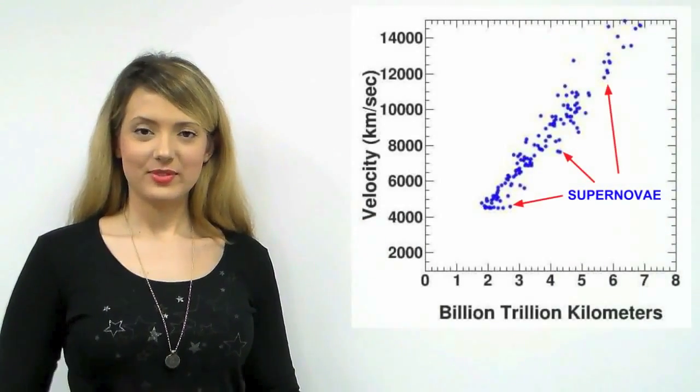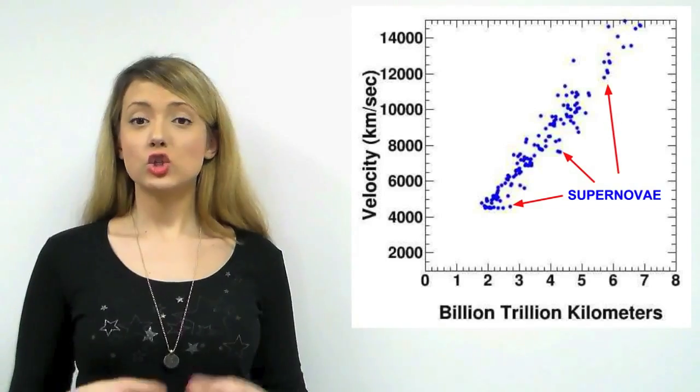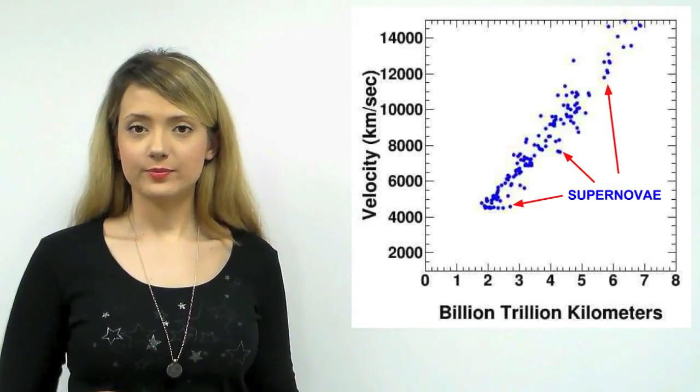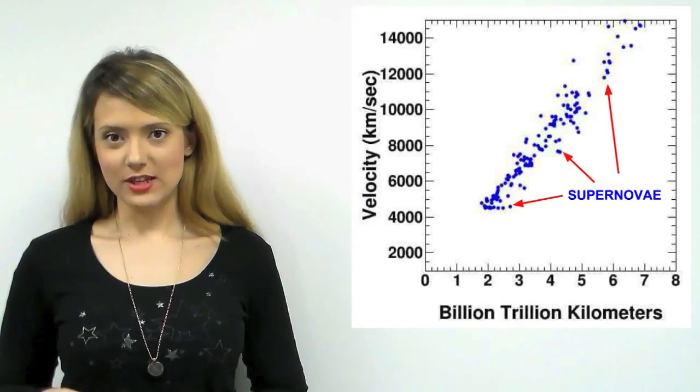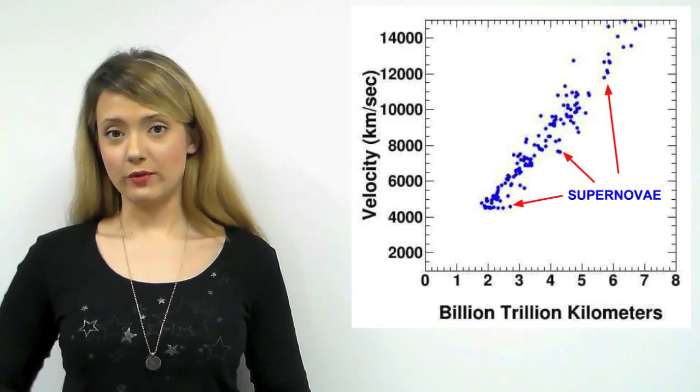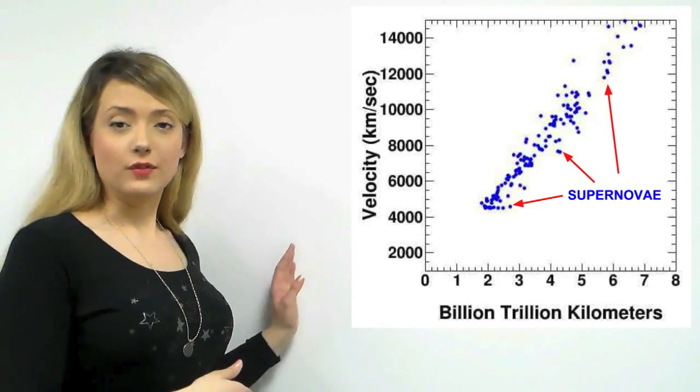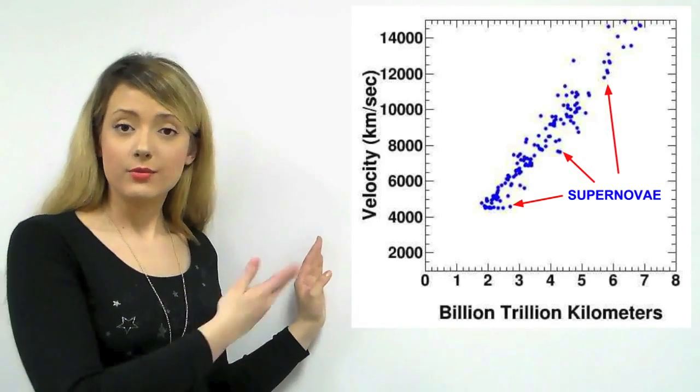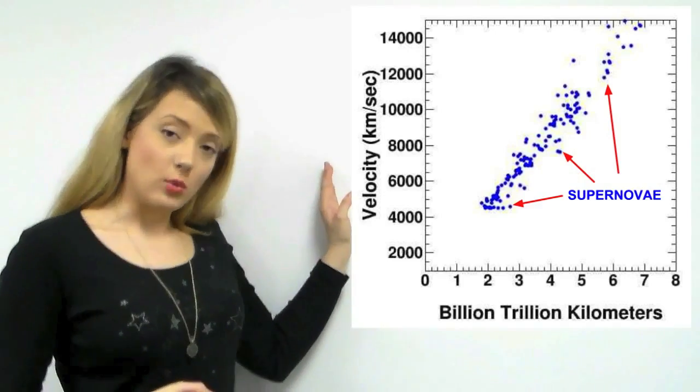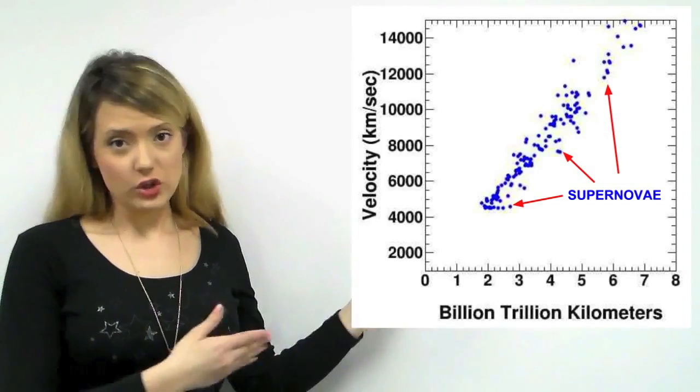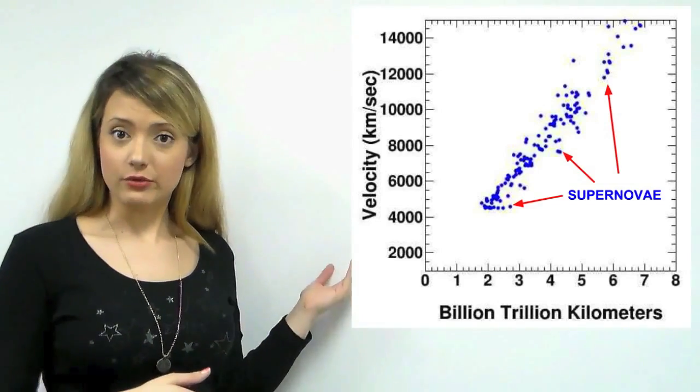Here's some data. The blue dots represent supernovae, which are explosions of dying stars. You can watch other videos on this channel to learn more about supernovae. In the graph, we plotted the velocity at which the supernovae are moving away from us against their distance. You can clearly notice the linear relationship.